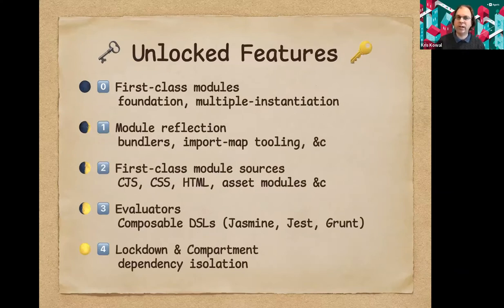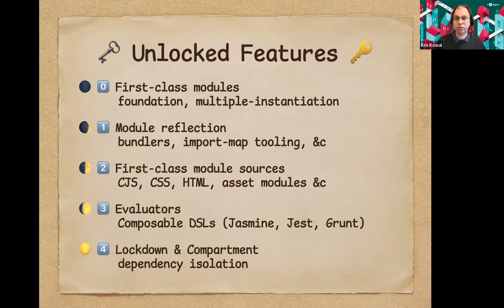The first layer is foundational — not just to the compartment proposal but to other proposals in flight as well. At layer zero, we would introduce a first-class Module constructor and ModuleSource constructor. This would unlock the ability to do multiple instantiation of modules and also unlocks deferred execution in relation to other proposals, serving as a foundation so that all these module proposals share common ground.